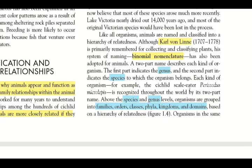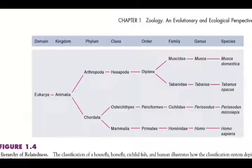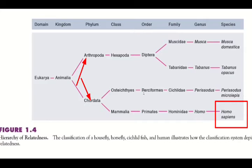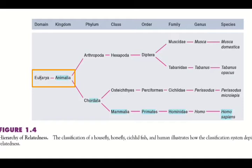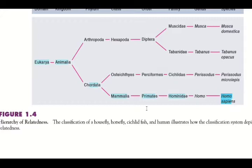Above the species and genus level, there are different groups: families, orders, classes, phyla, kingdoms, and domains. For example, in the hierarchy of relatedness, looking at Chordata, the species is Homo sapiens, the genus is Homo, the family is Hominidae, the order is Primates, the class is Mammalia, the phylum is Chordata, the kingdom is Animalia, and the domain is Eukaryota.